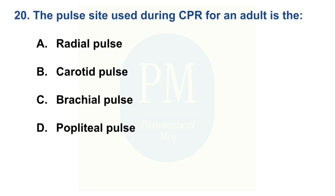The pulse site used during CPR for an adult is: Option A: Radial pulse, Option B: Carotid pulse, Option C: Brachial pulse, Option D: Popliteal pulse. The correct option is Option B, carotid pulse.